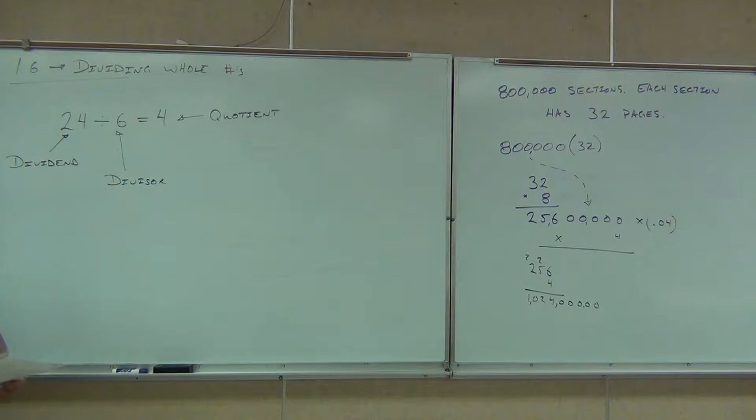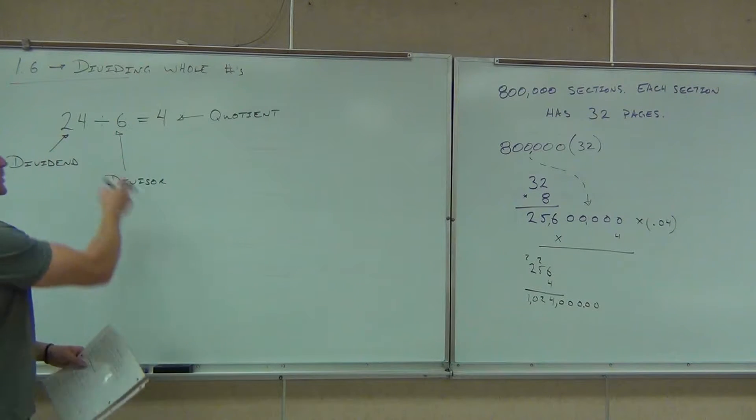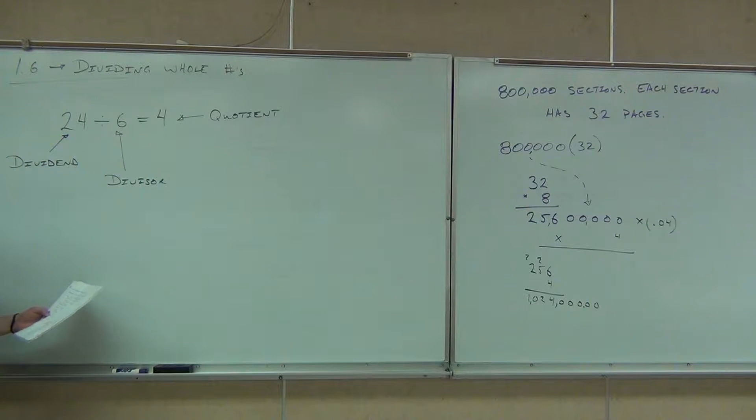And you know what? There's a few different ways that we can represent this problem. We could do just the standard 24 divided by 6, but there are also some other options for us. Oftentimes you'll see it like this. You ever seen that before? Yes. Which number is going to go inside of our division symbol here? Four. First number goes inside.